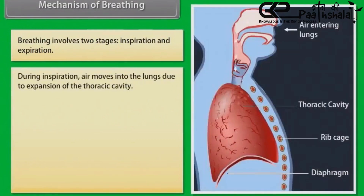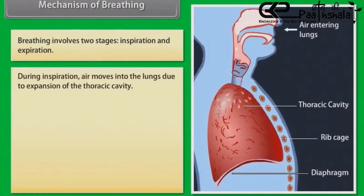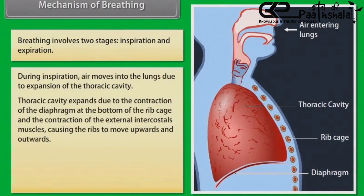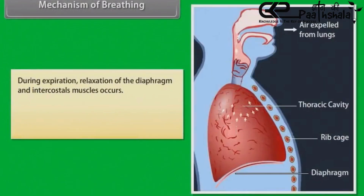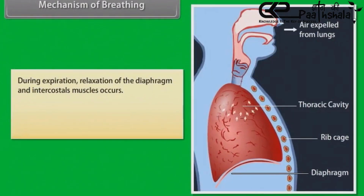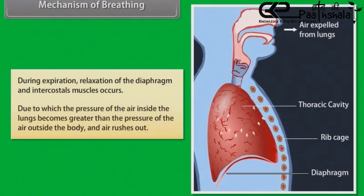During inspiration, air moves into the lungs due to expansion of the thoracic cavity. The thoracic cavity expands due to the contraction of the diaphragm at the bottom of the rib cage and the contraction of the external intercostal muscles, causing the ribs to move upwards and outwards. This expansion also increases thoracic volume and decreases thoracic pressure, so that the net flow of air is down its pressure gradient and into the lungs. During expiration, relaxation of the diaphragm and intercostal muscles occurs, due to which the pressure of air inside the lungs becomes greater than the pressure outside the body, and air rushes out.